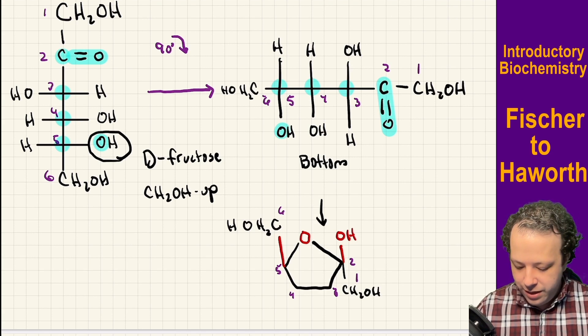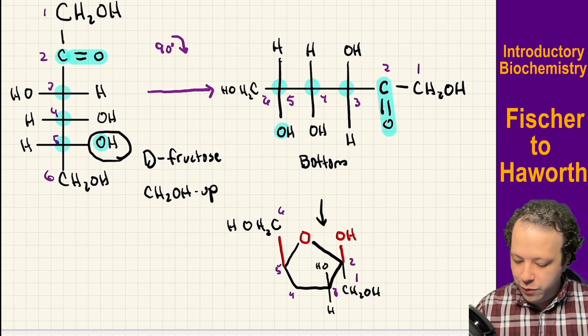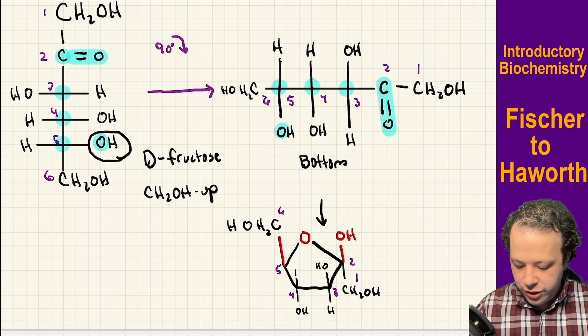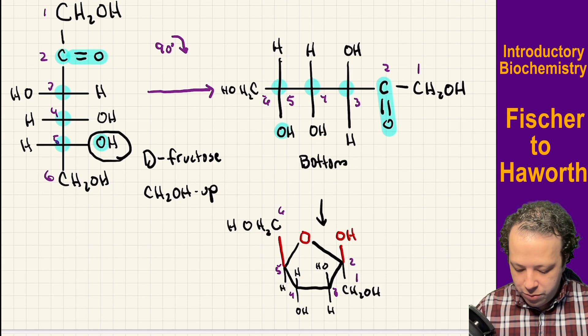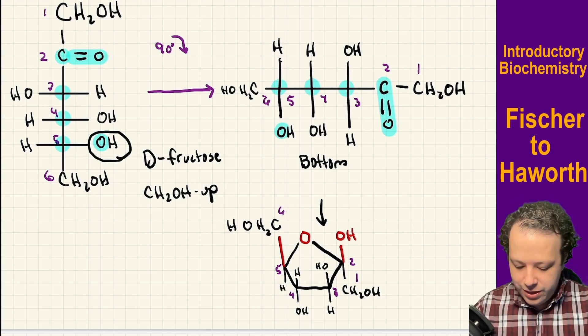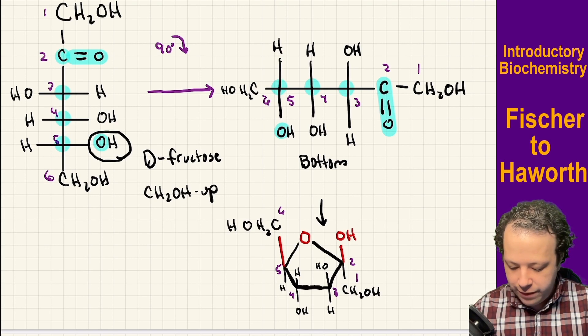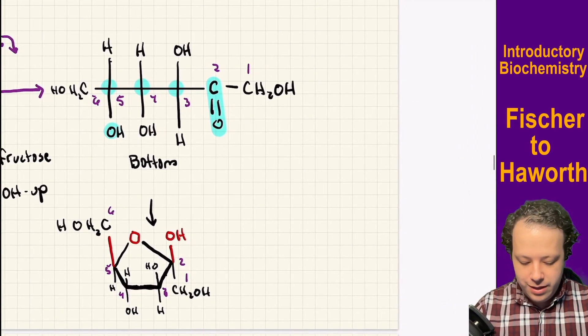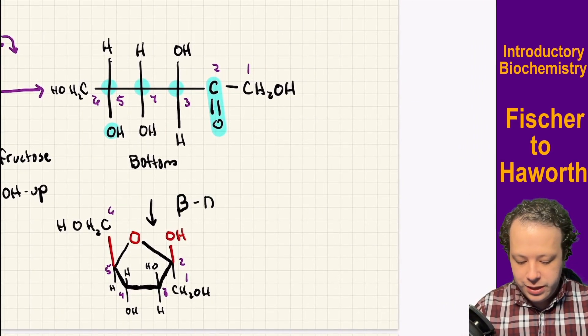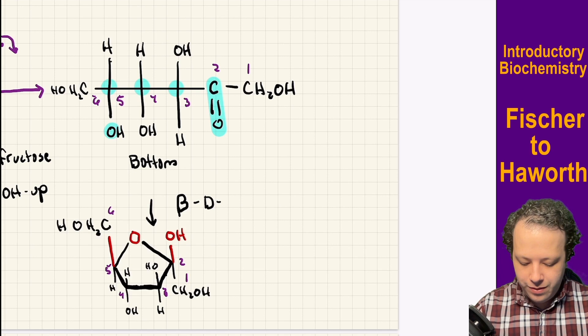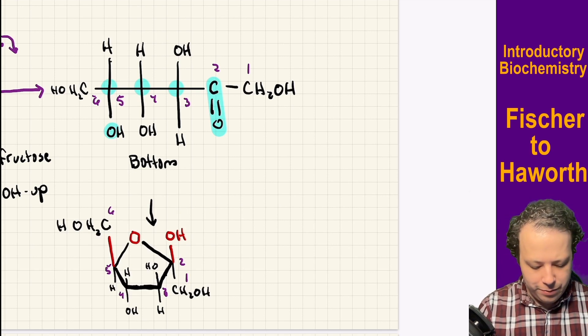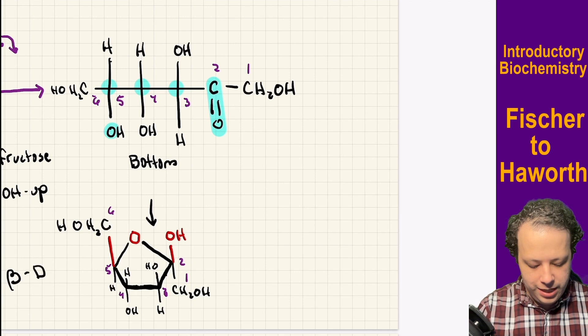Now on carbon three, we had the OH pointing up, hydrogen down. On carbon four, we have the OH pointing down, the hydrogen up. And then on carbon five, we had our CH2OH pointing up, and then our hydrogen is pointing down. So this is one structure, and we'll bolden the bottom just to give it that little bit more of that Haworth look to it. So that is the beta representation. This is beta D-fructose.